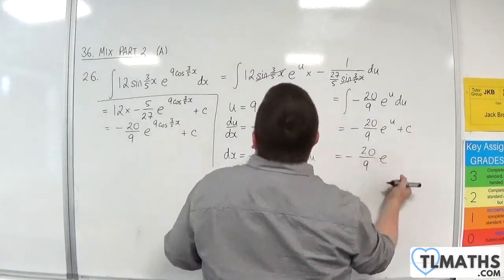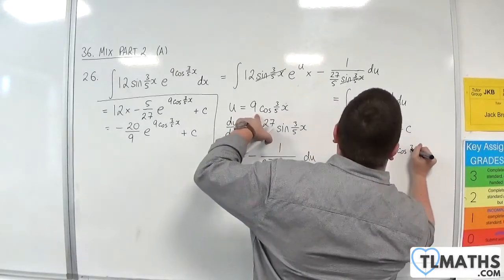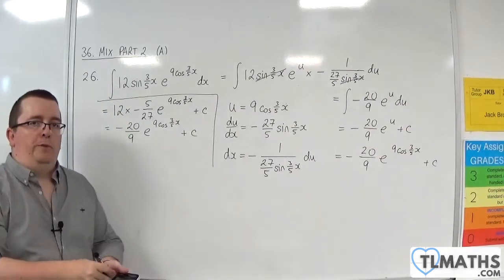Now put the u back in, which was 9 cosine of 3/5 x. You can see we get to the same result as before.